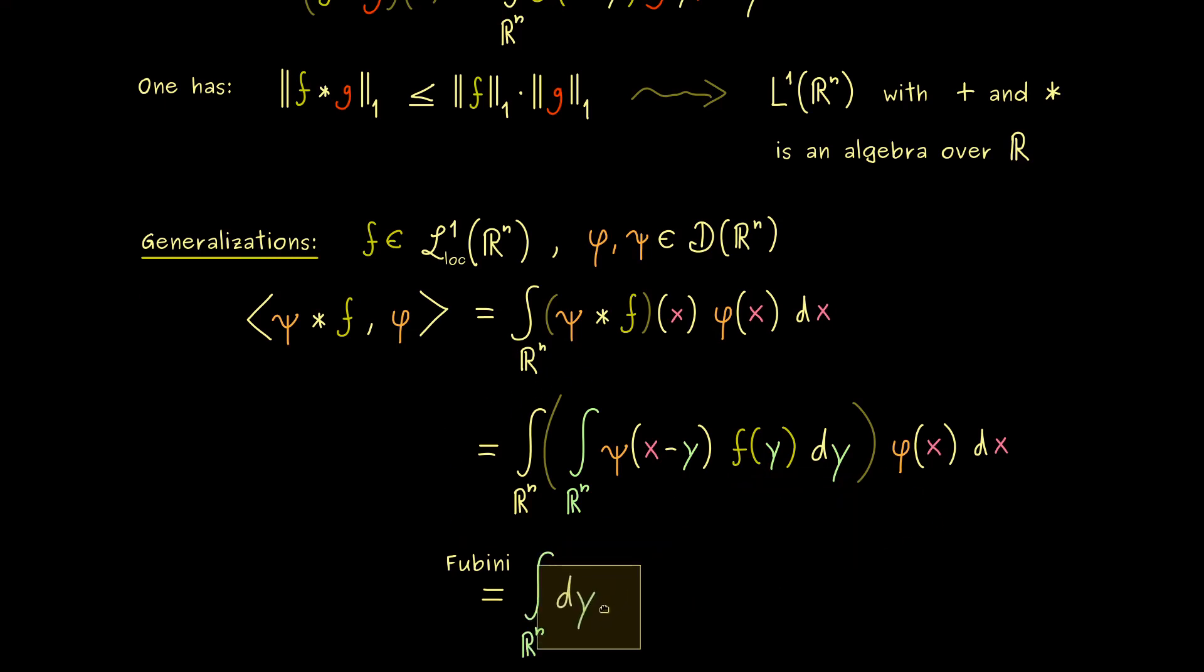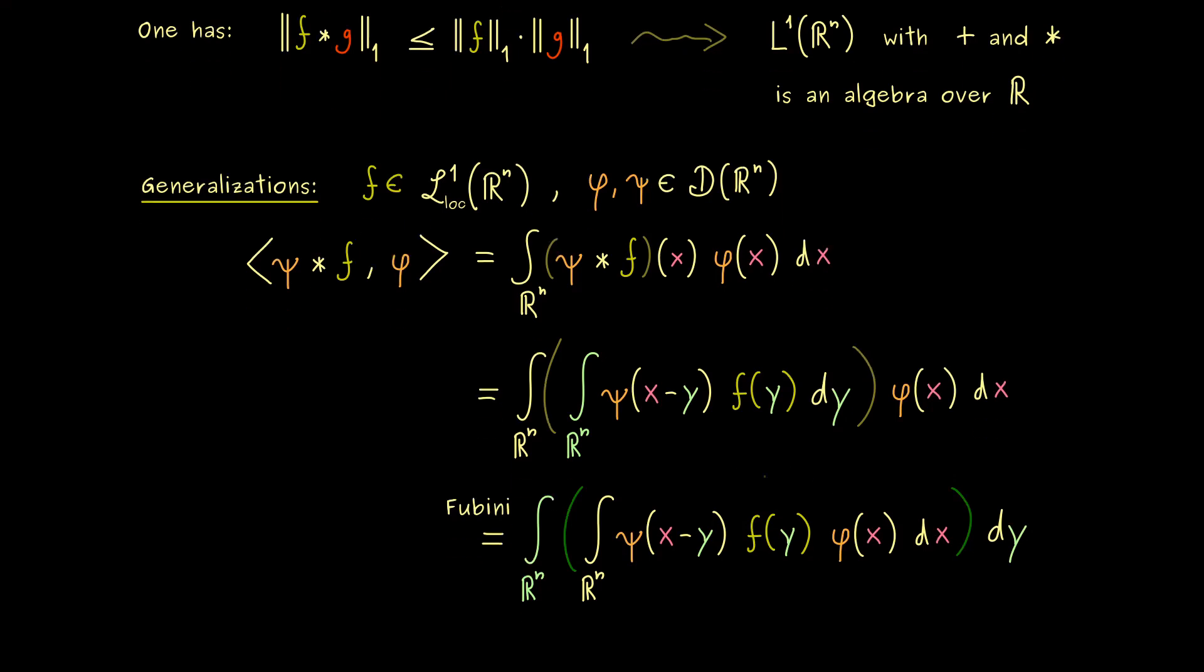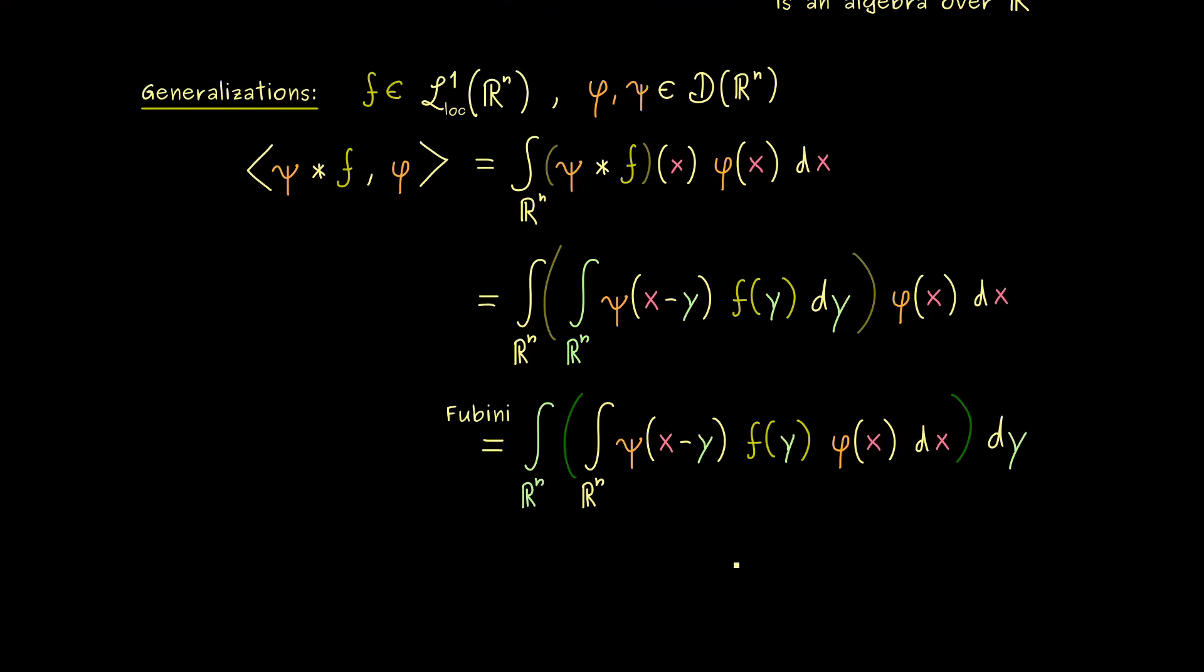Hence we can put the integration with respect to y to the outside. In other words, we first do the integration with respect to x. So this is all what we do here. We just change the order of the two integrations. However, now we see that inside this first integral we have f of y that does not depend on x. In other words, we can just pull it out as a constant there. And if we pull it in the front, we immediately see what we have here.